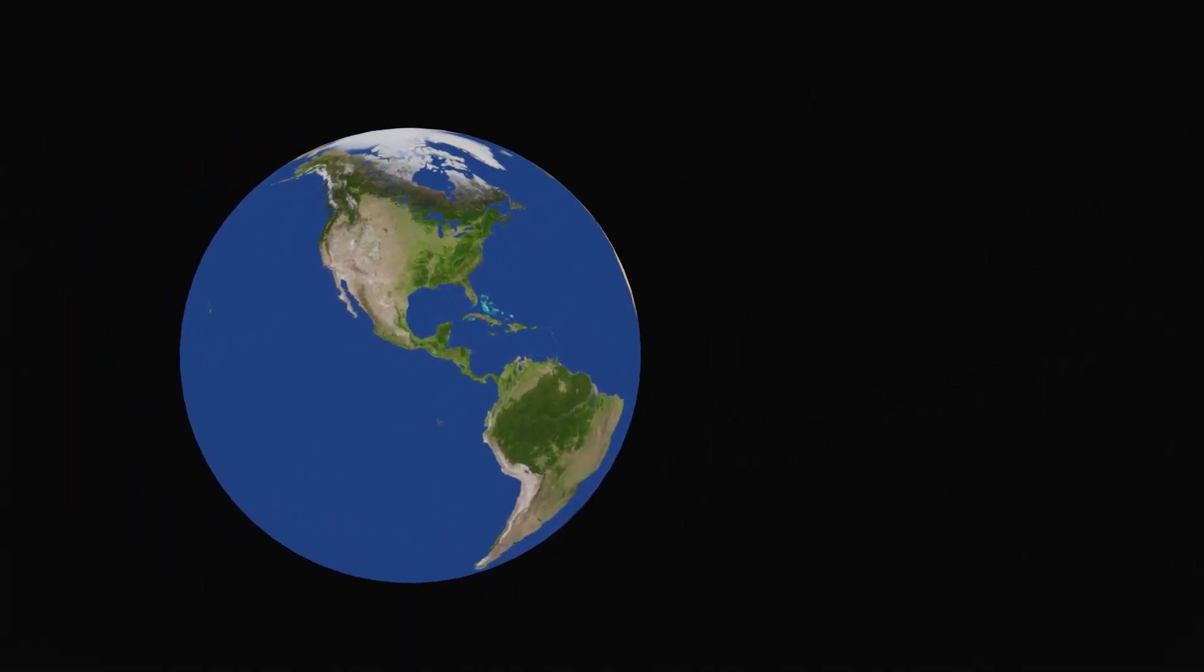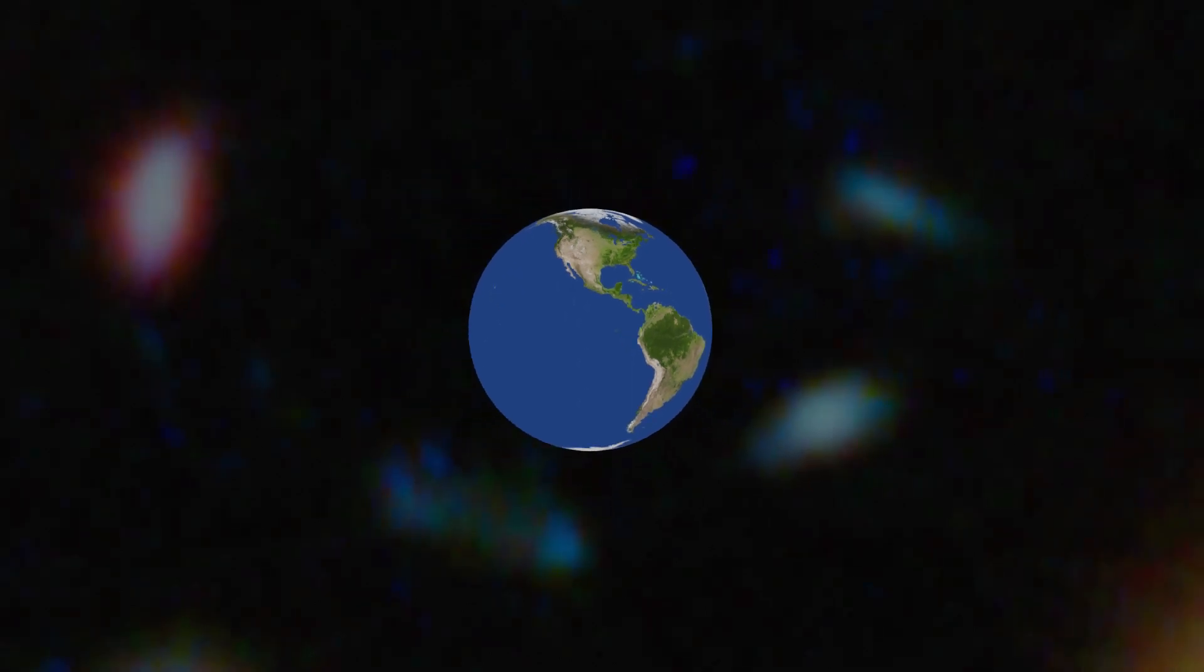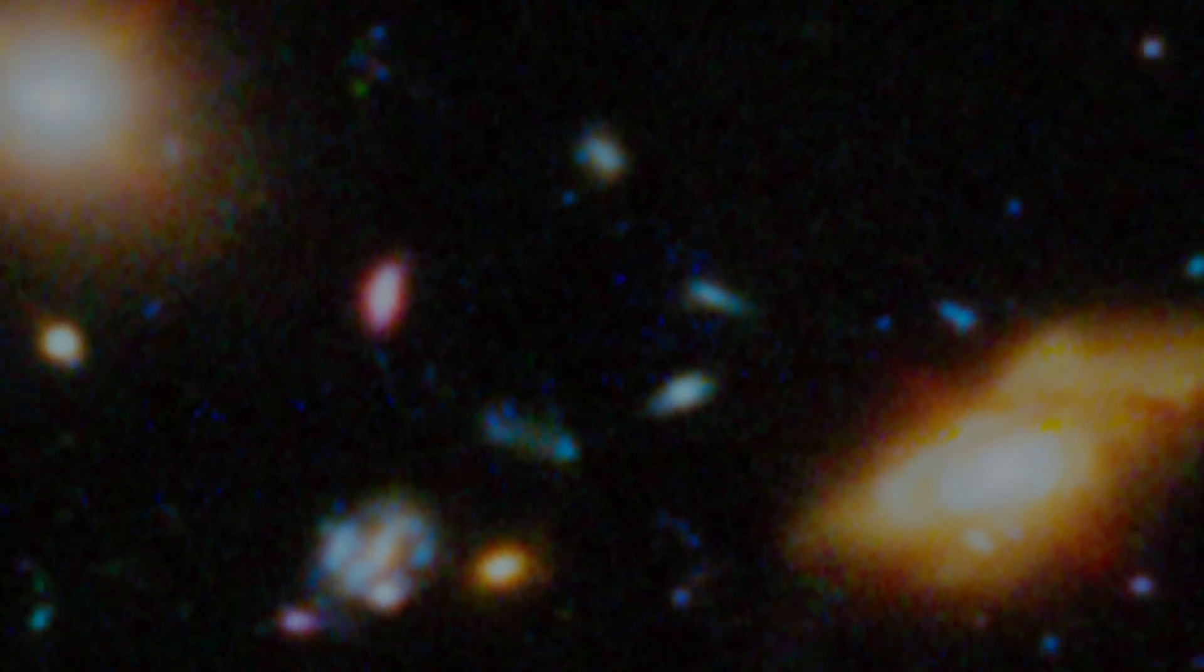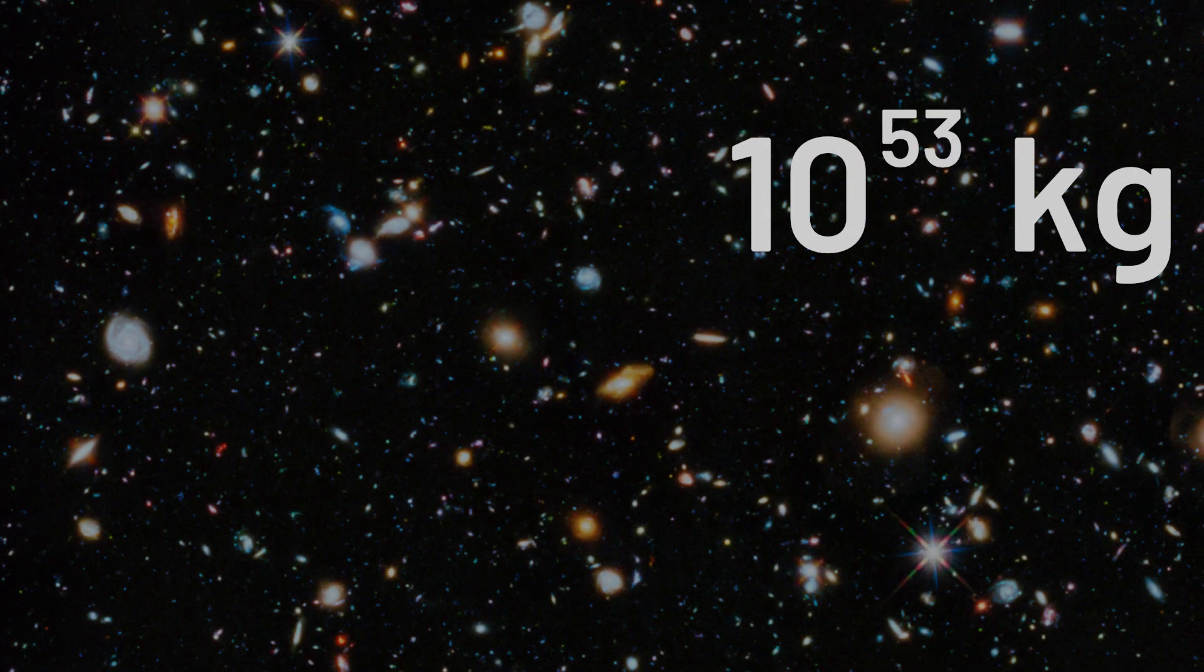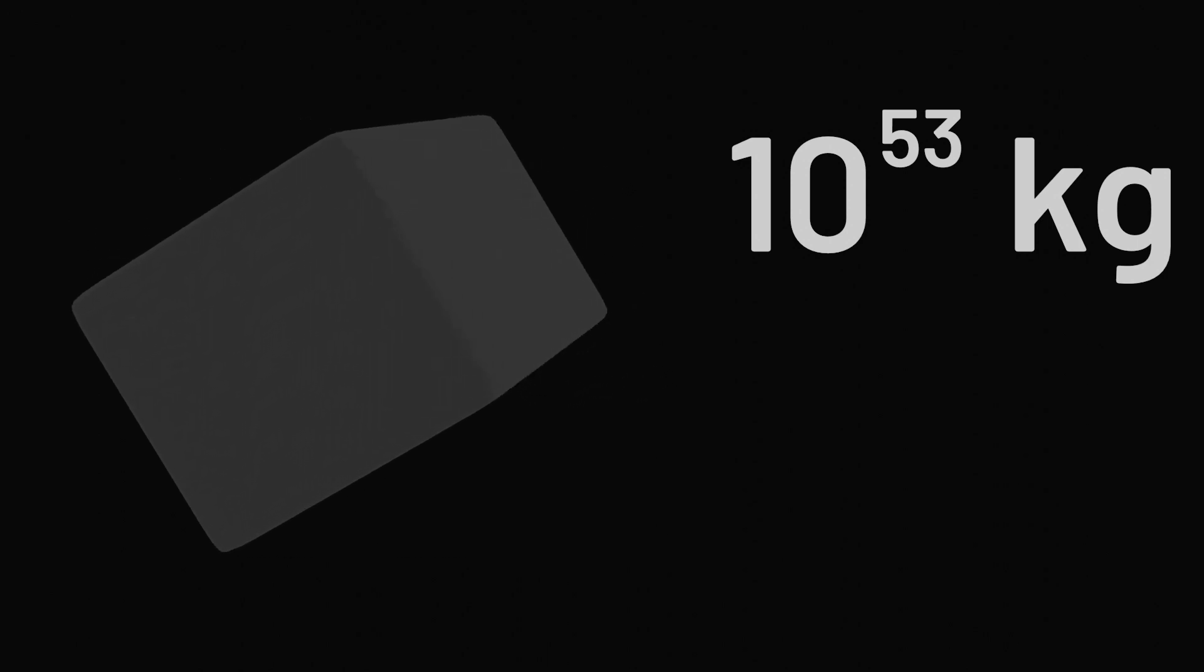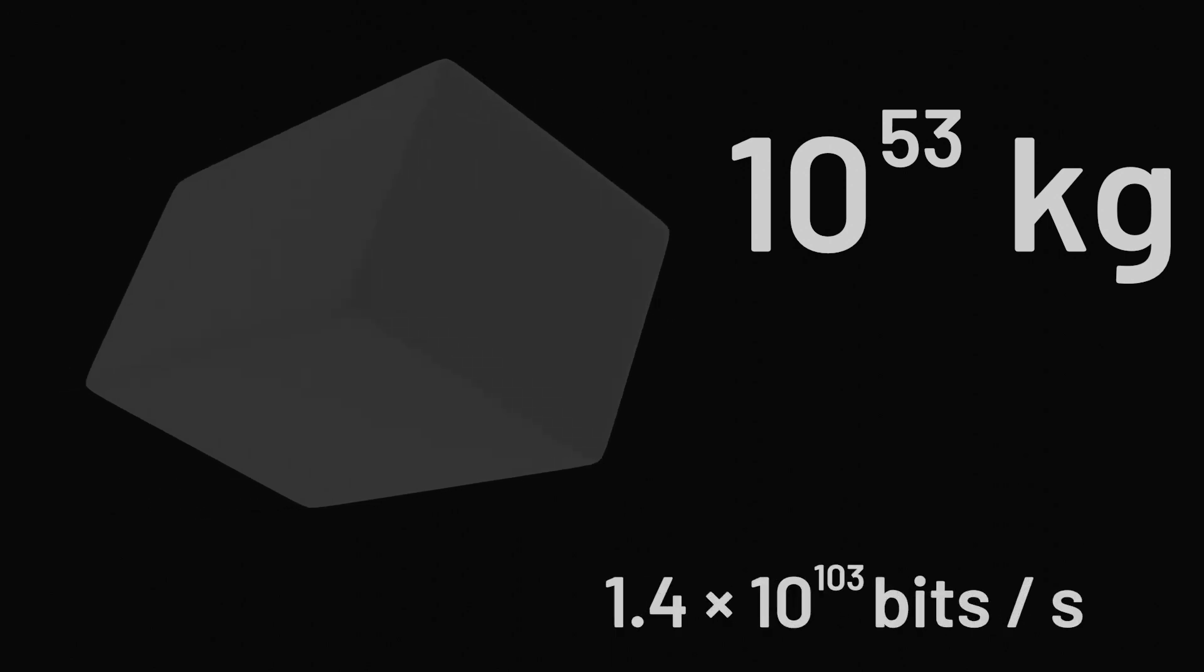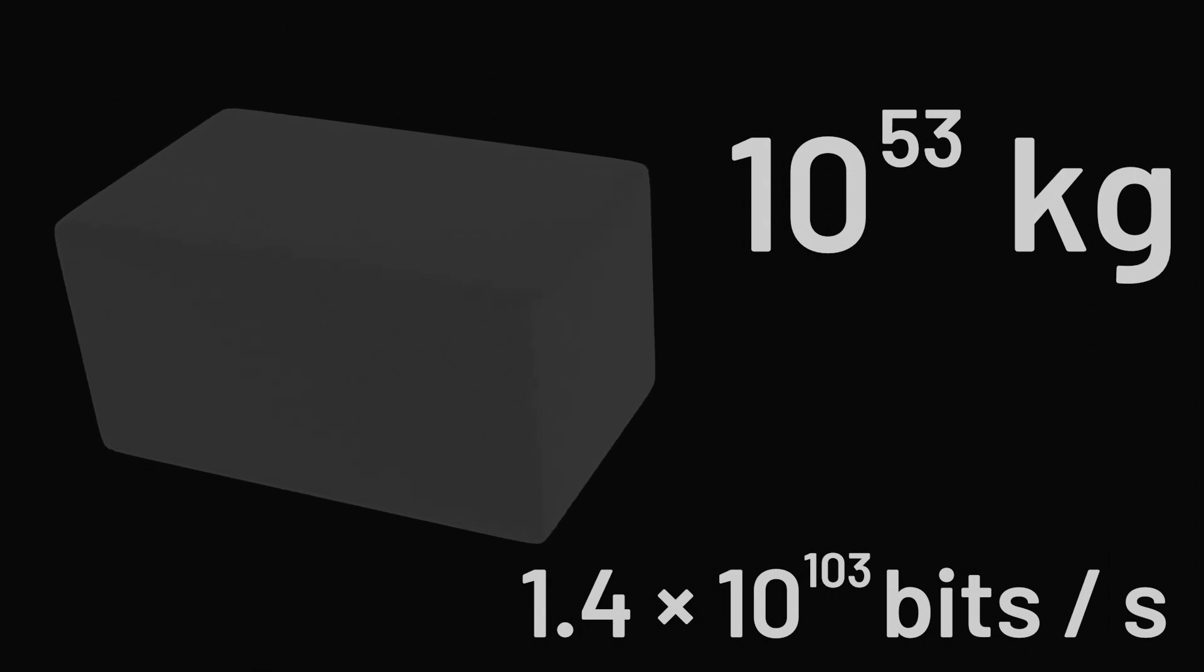And the most massive computer we could construct would use all of the available mass in the universe. Our best estimates right now place the mass of the observable universe at about 10 to the 53 kilograms. So if we created a computer with all of the available mass in the observable universe, the upper bound on the number of bits this universe-sized computer could process is about 1.4 times 10 to the 103 bits per second.